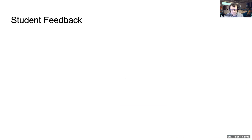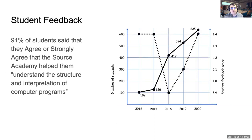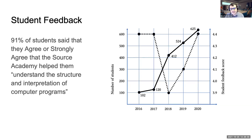We've had some pretty good student feedback. In the last time we ran this course, 91% of students said they agree or strongly agree that the Source Academy helped them understand the Structure and Interpretation of Computer Programs. We scaled this module from around 100 people all the way up to 670 — you can see the moment where it went from an optional course to a core course, a little dip in the first years of scaling, but we're now back up to where we started. Our students seem very positive on the course.